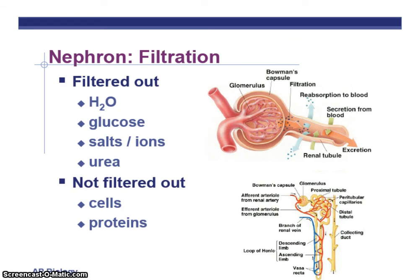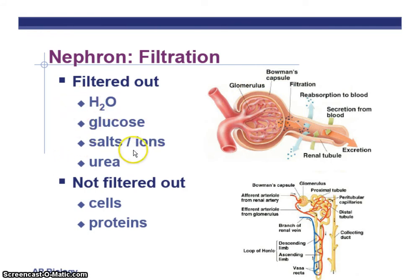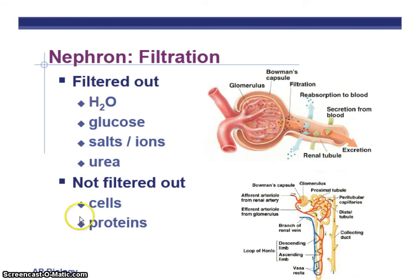The first step is filtration, and this happens in the glomerulus within the Bowman's capsule. The glomerulus consists of capillary beds, with the Bowman's capsule surrounding them. We're going to filter out water, glucose, salt, ions, and urea — all those things are going to leave within the Bowman's capsule, filtered out of the blood. What stays in the blood? Cells and proteins are too big to be filtered out across the capillary beds, so they stay within the blood and are not filtered out.